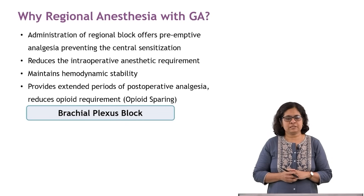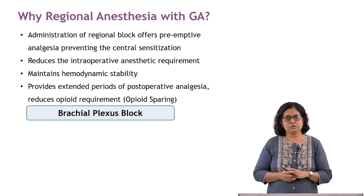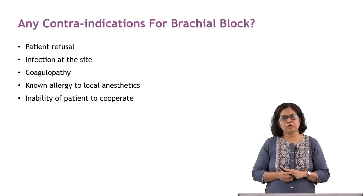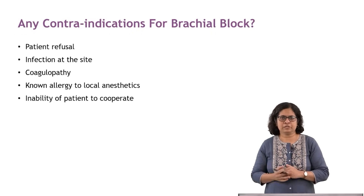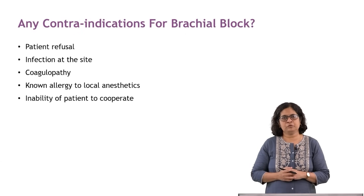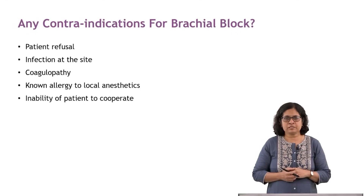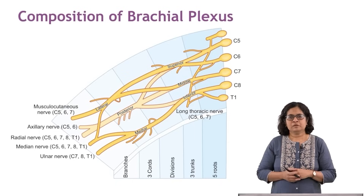So why regional anesthesia with GA? We are giving a brachial block as preemptive analgesia. Contraindications for brachial block are the same as for any regional anesthetic: patient refusal (absolute contraindication), infection at the site, coagulopathy, known allergy to local anesthetics, and inability of the patient to cooperate.